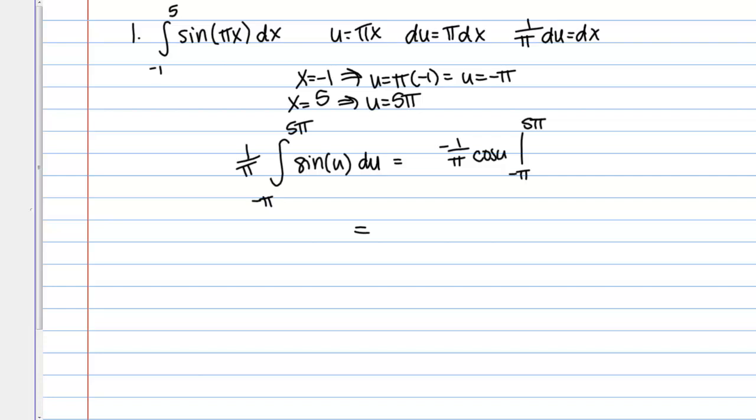Now I just need to plug in my bounds. I can keep this negative 1 over pi out front. Then I'm going to have cosine of 5 pi minus cosine of negative pi.